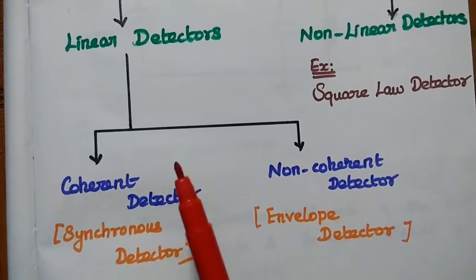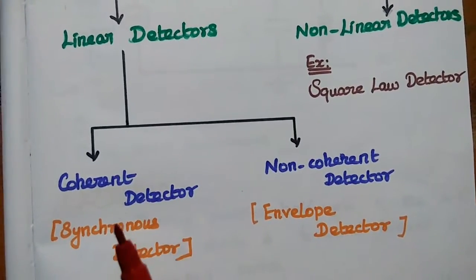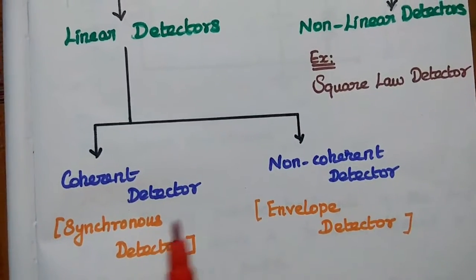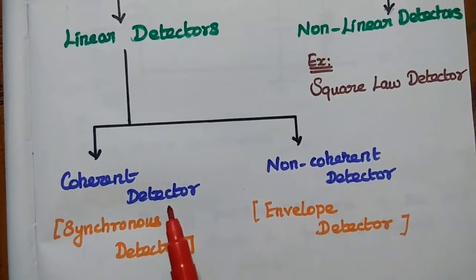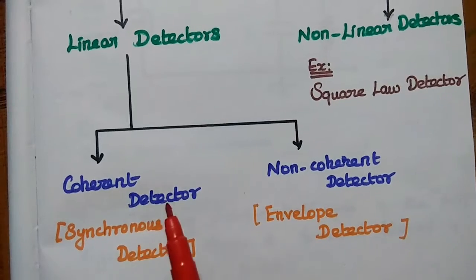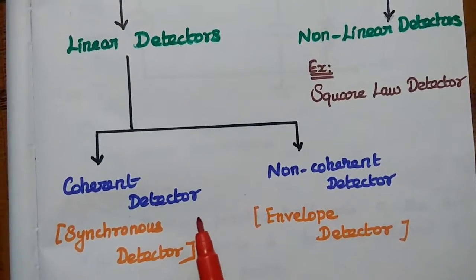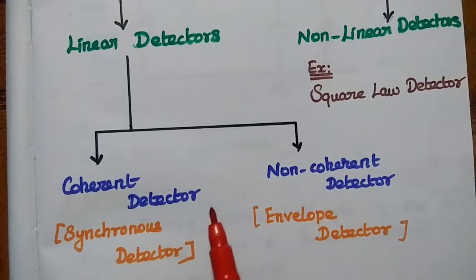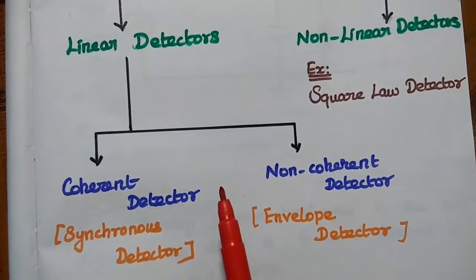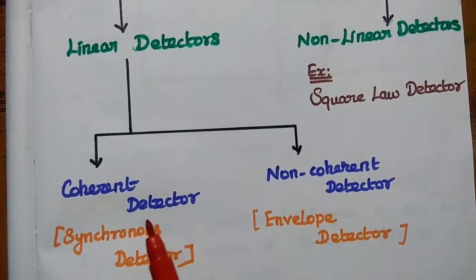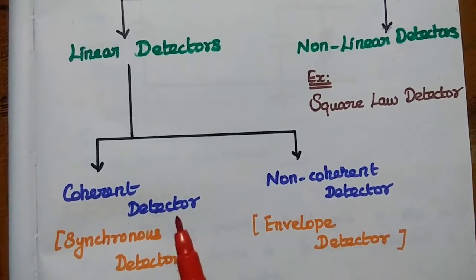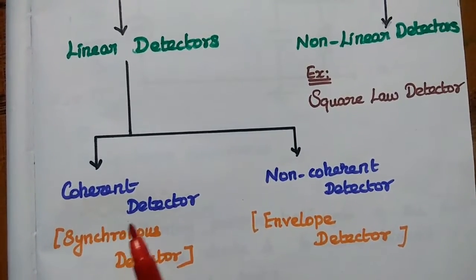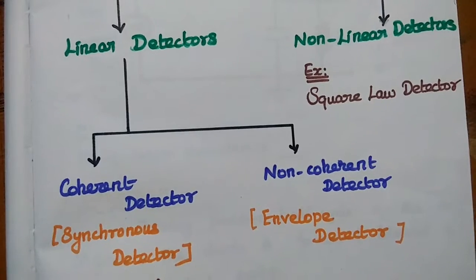Linear detector is further classified into coherent detector and noncoherent detector. In a coherent detector, we are going to synchronize the carrier signal generated at the receiver side to the carrier at the transmitter side. Both the carriers should be synchronized with each other. The example for this coherent detector is the synchronous detector.